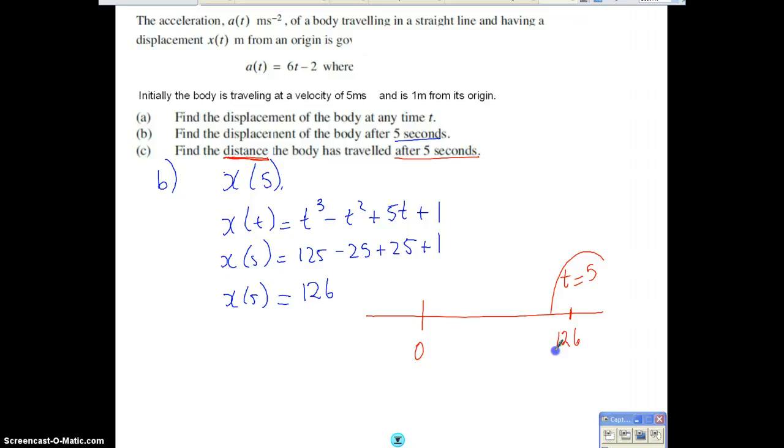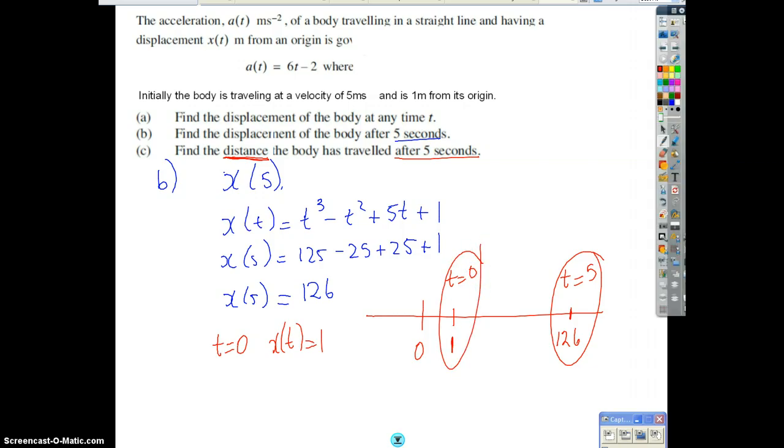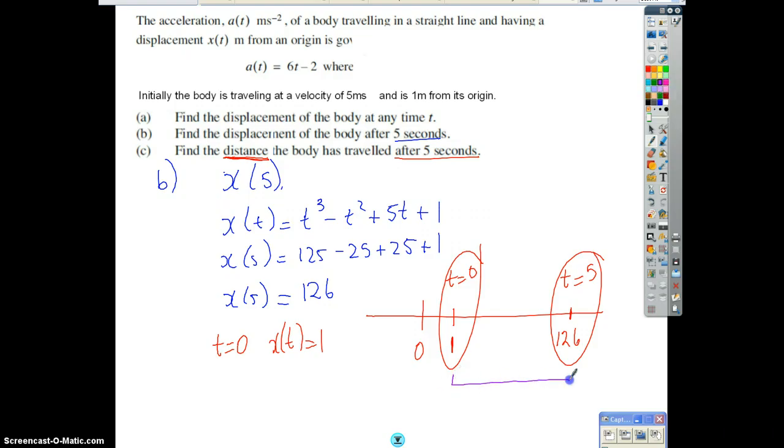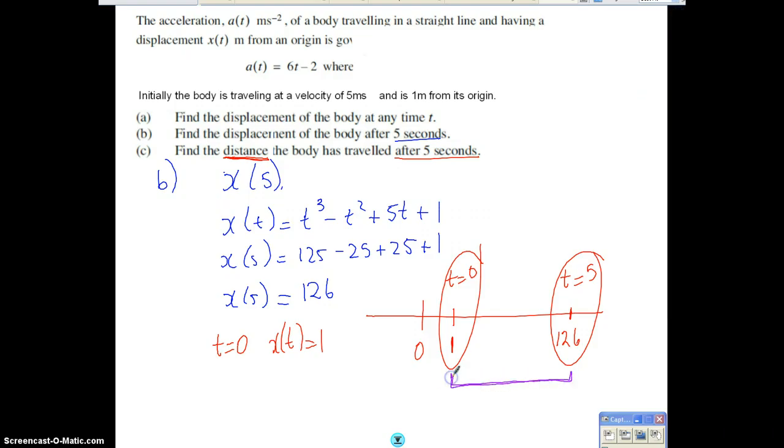This is where it is after 5 seconds. Well, we need to think about where it started from. And what did we know about initially? We knew when t equals 0, it was 1 meter from the origin. So x(0) equals 1. So let's put that in here. When t equals 0, it is 1. So the distance travelled then is this distance here, isn't it? As you can see logically, that's 126 minus 1.